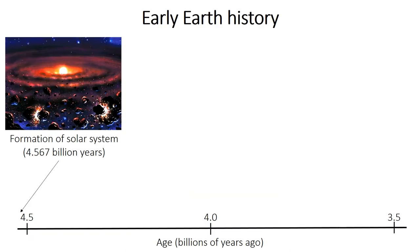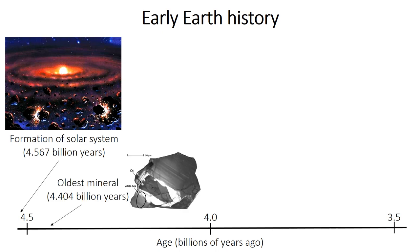First, some background on the early Earth, which is our backdrop for the evolution of life. The solar system, and our planet within it, formed a bit over 4.5 billion years ago. This is known only from the chemistry of meteorites, because the oldest piece of the Earth that we've discovered so far is a tiny mineral crystal that's about 4.4 billion years old.